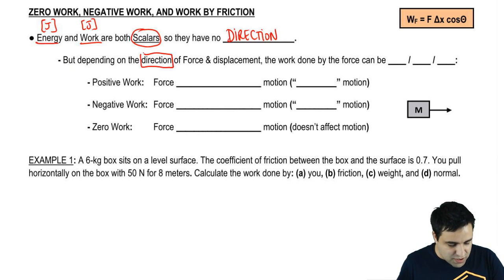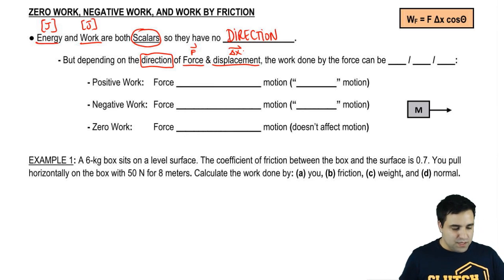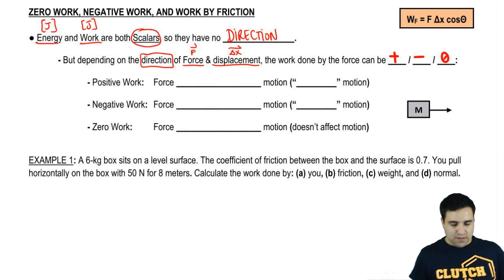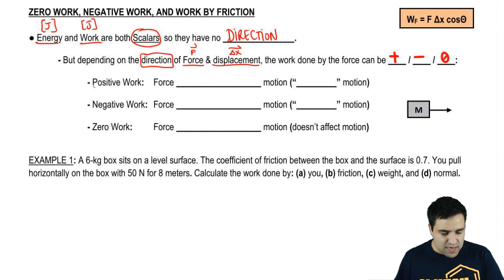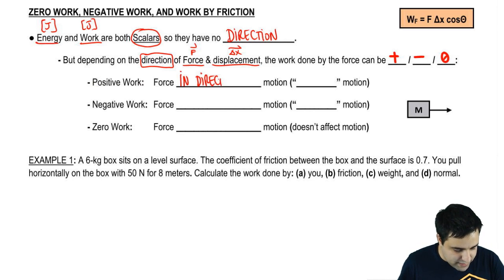Depending on the direction of force—force has direction—and displacement—displacement has direction—work done by a force can be either positive, negative, or zero. I think it's helpful if you understand this conceptually. Positive work is when the force acts in the direction of motion.